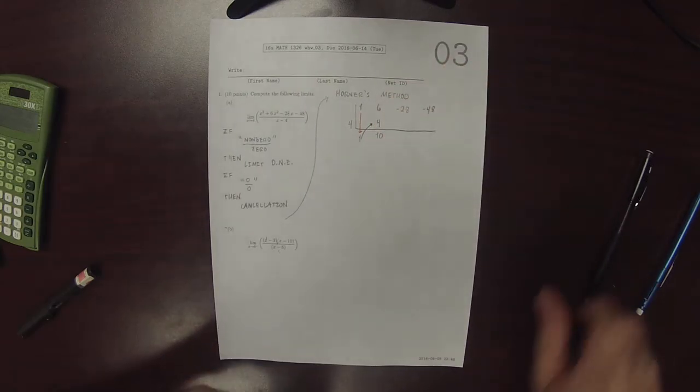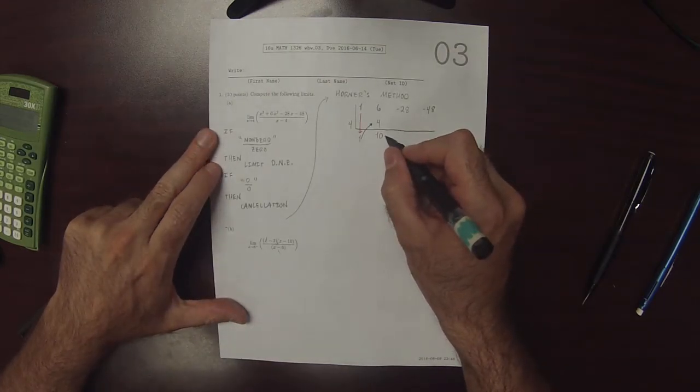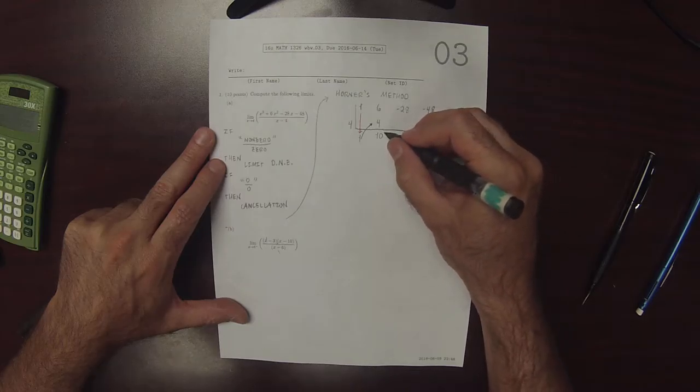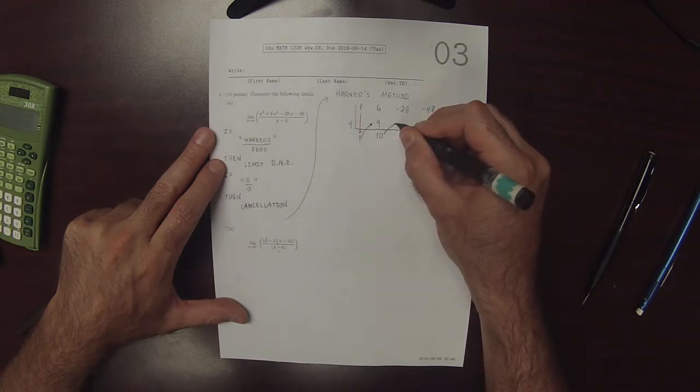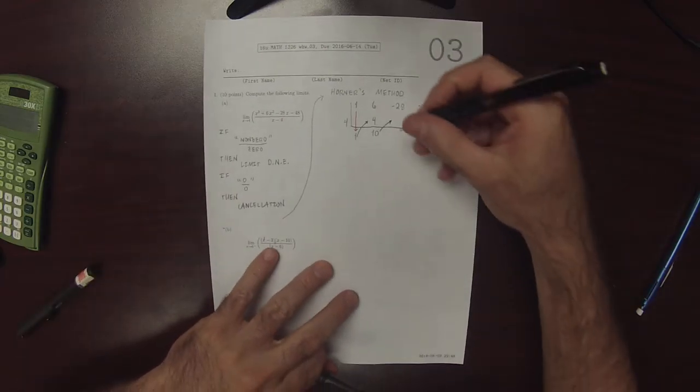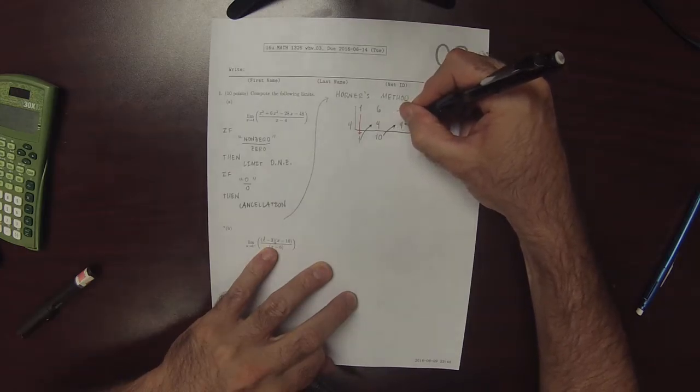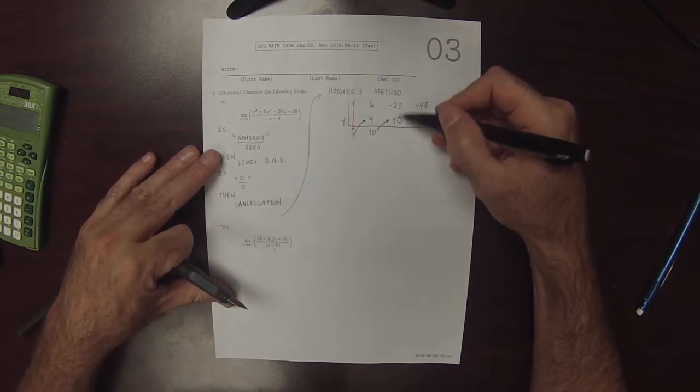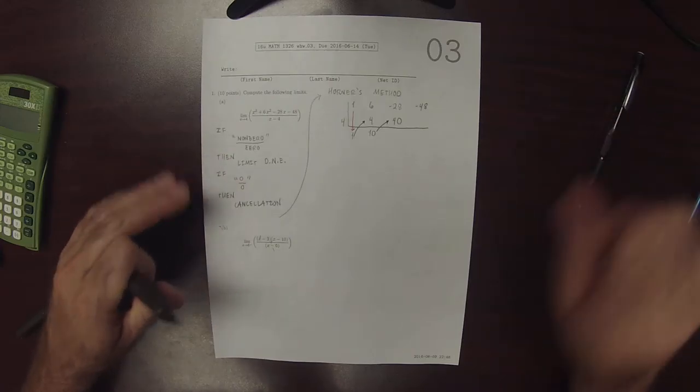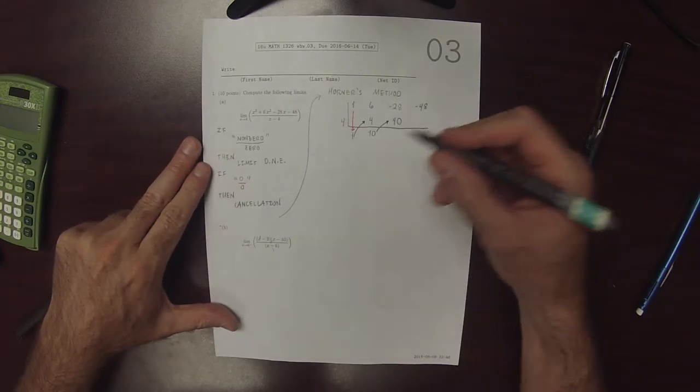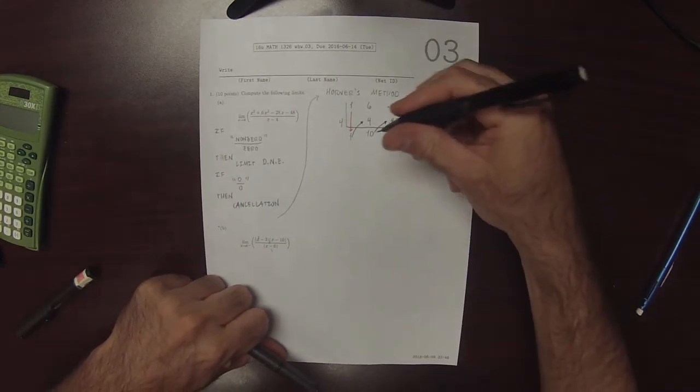So 10 made it outside of the house. But now 10 wants to get back in. And to get back in, 4 is guarding the door. So when 10 comes back in, it comes back in as 40. Now you add this column. So when you add these together, you get 12.